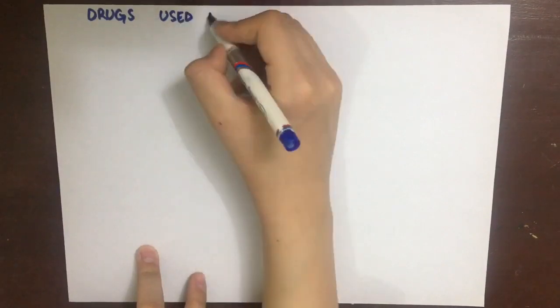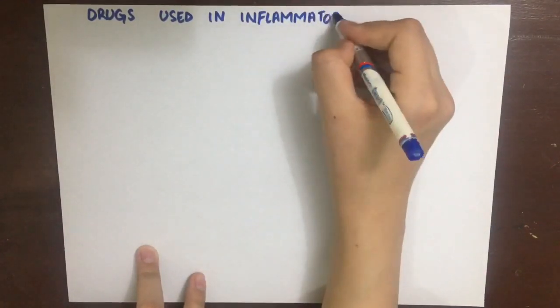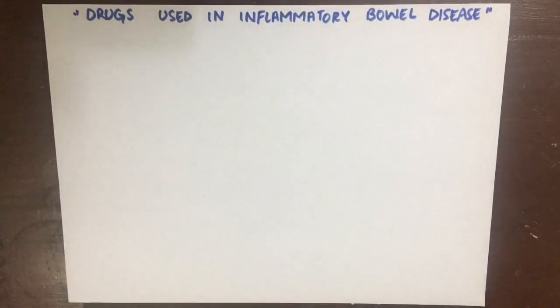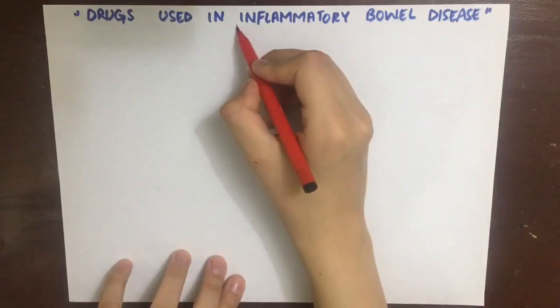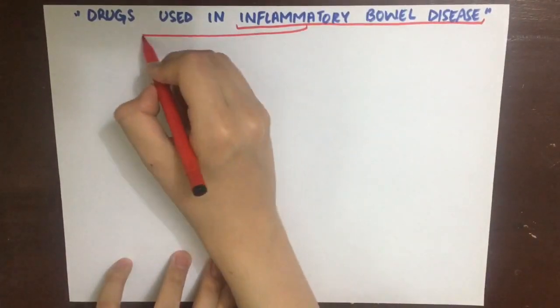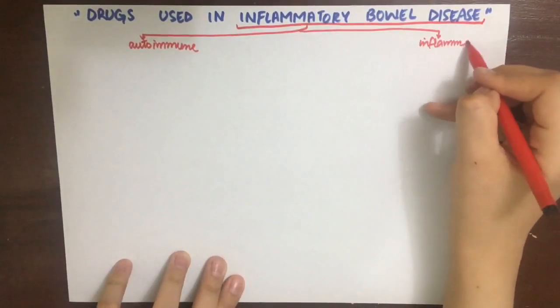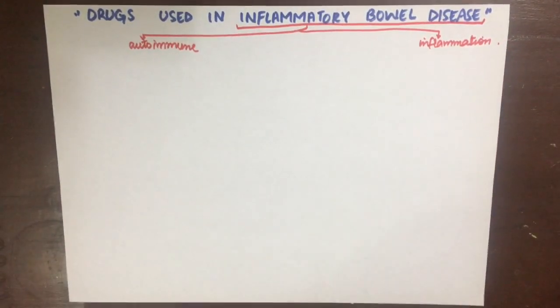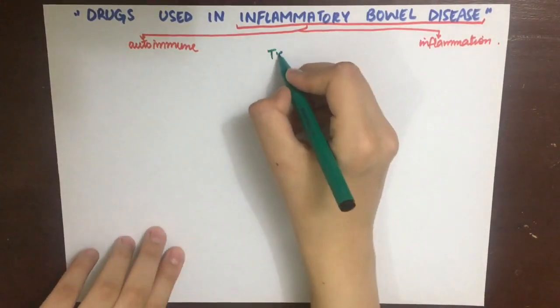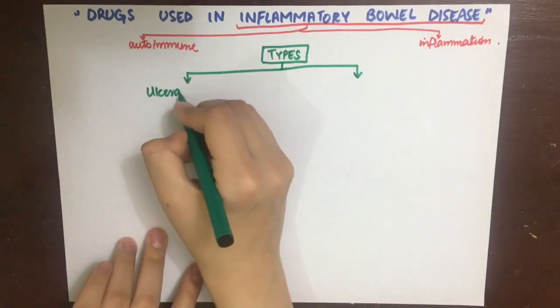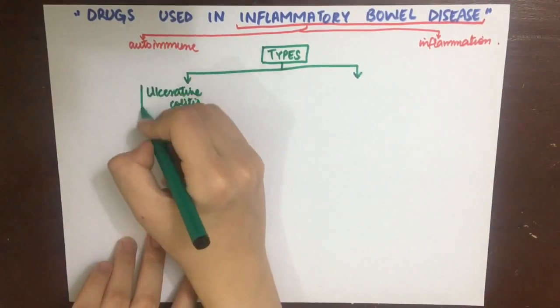Drugs used in inflammatory bowel disease. Inflammatory bowel disease is an umbrella term used to describe autoimmune disorders that involve chronic inflammation of the GIT. Remember these two keywords: autoimmune and inflammation. The two important diseases categorized under the term inflammatory bowel disease are ulcerative colitis and Crohn's disease.